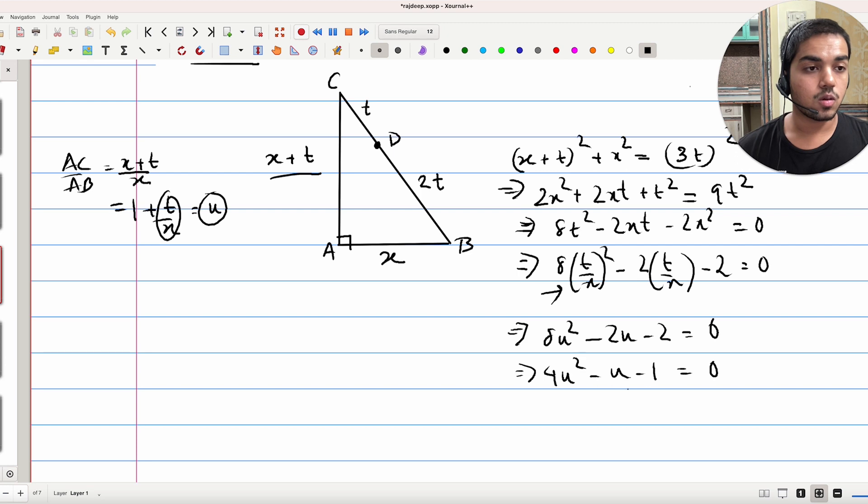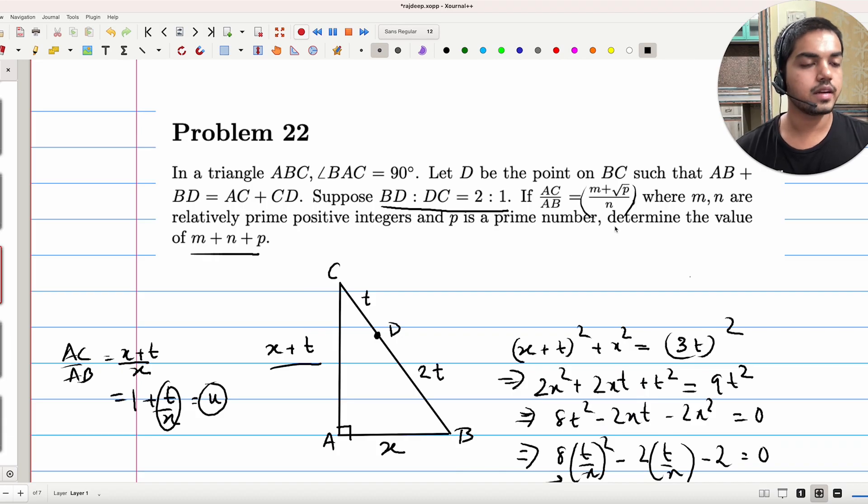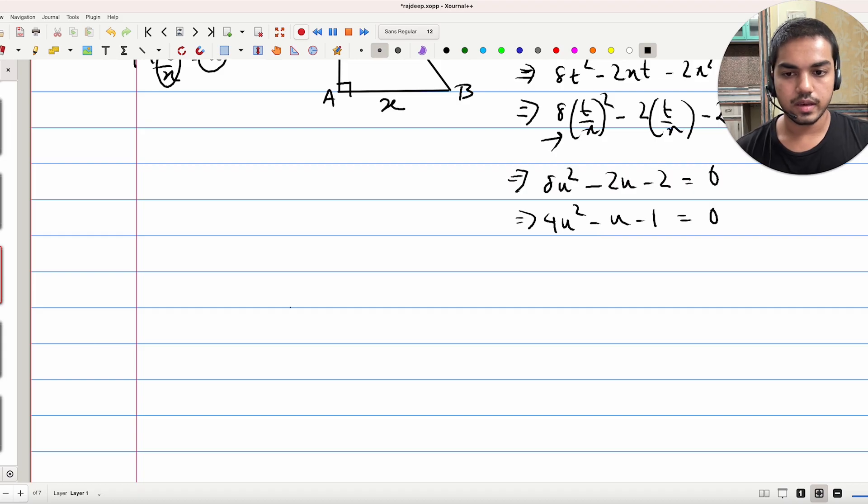And if I just use the quadratic formula here, it's perceivable that I'll get something that looks like this. Right? So let's just quickly apply the quadratic formula. We get that U is 1 plus minus root over 4 square, which is 16. Minus 1 square, which is just 1 minus 4 into 4 into minus 1.